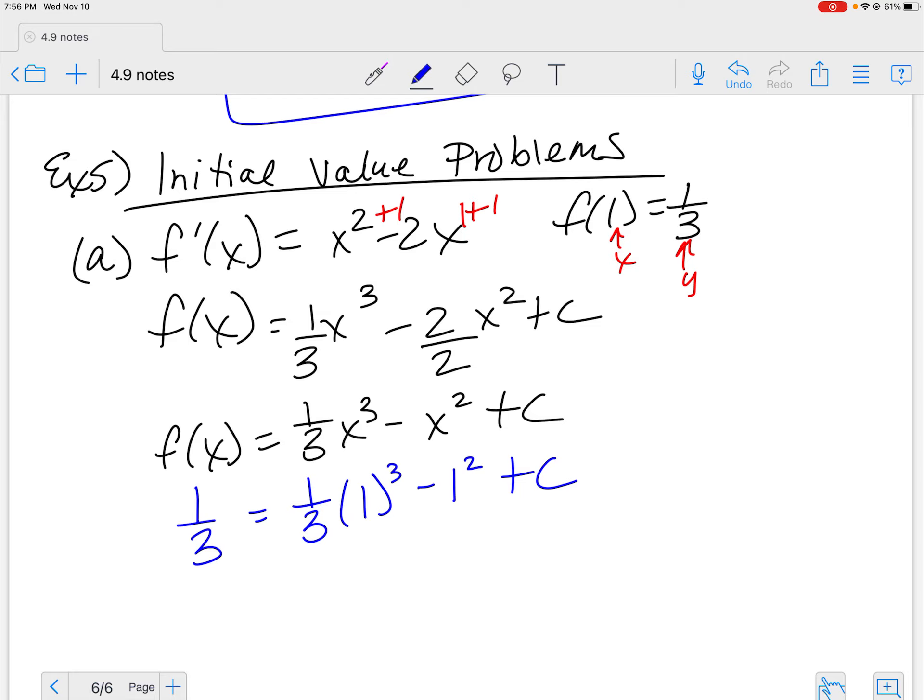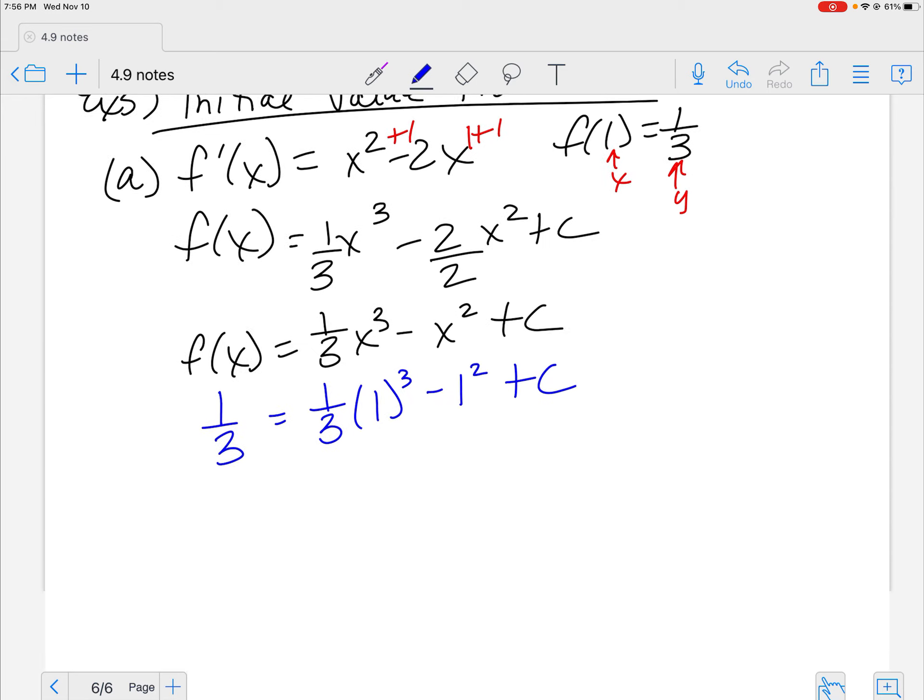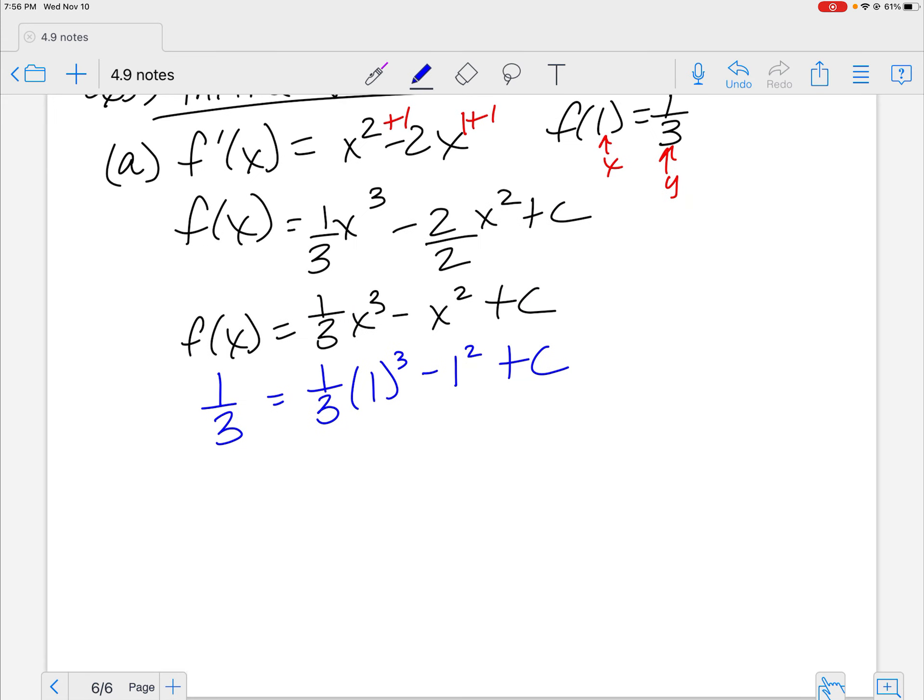So here's what we actually have. I've got 1/3 is equal to 1/3 times 1 cubed minus 1 squared plus C. Now the only variable that I have is my C and that's what we're solving for. So it's really 1/3 is equal to 1/3 minus 1 plus C. So I'm going to subtract 1/3 from both sides.